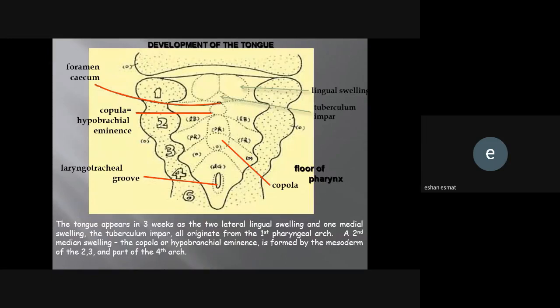The tongue appears in three weeks as two lateral lingual swellings and one medial swelling, the tuberculum impar, all originating from the first branchial arch. A second medial swelling, the copula or hypobranchial eminence, is formed by the mesoderm of the second, third, and part of the fourth arch.